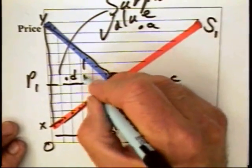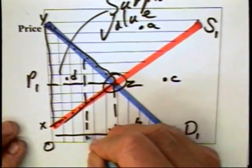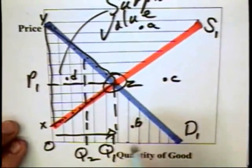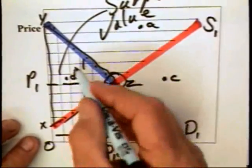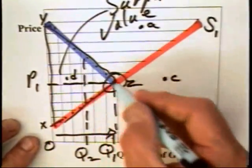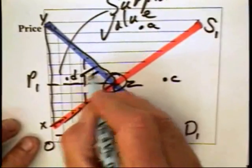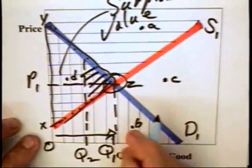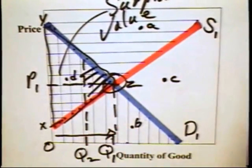If, in fact, less than Q1 is produced, for example, Q2 is produced, then notice that we do not get the entire triangle. We miss out on this amount and we will be using this kind of analysis to talk about the impact of such things as monopoly, pollution and a number of other policies.